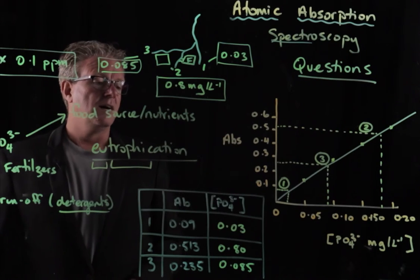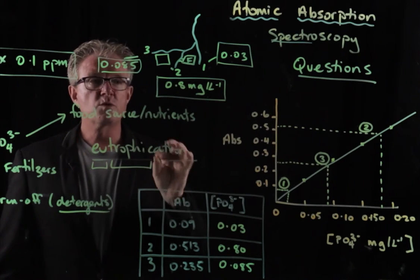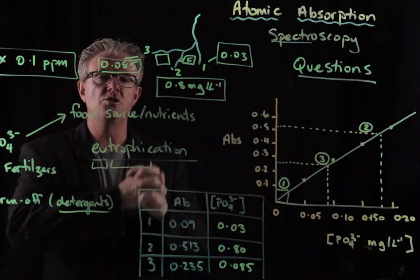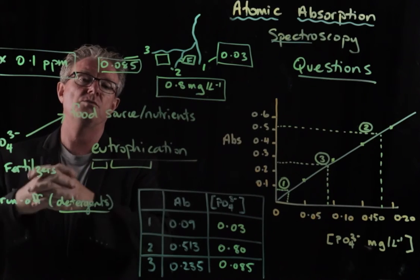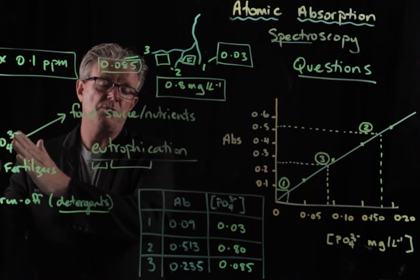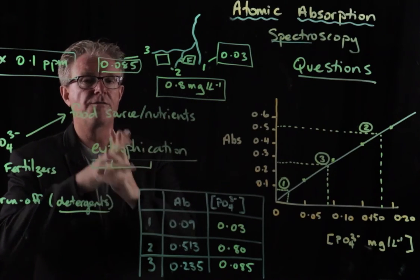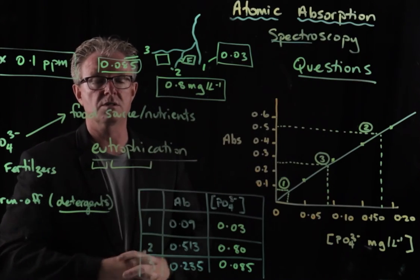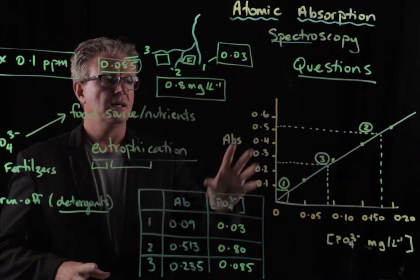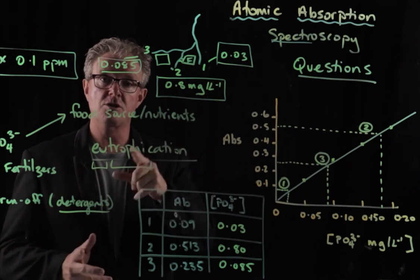So hopefully that makes sense for you in terms of reading it. But just remember, atomic absorption spectroscopy is used for metal ions predominantly because you have a hollow cathode tube that releases specific wavelengths of light from those metal ions that's then absorbed by the metals and gives you an absorbance value.